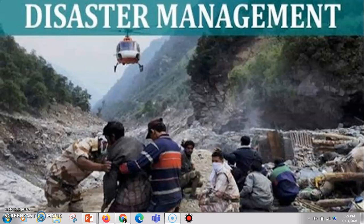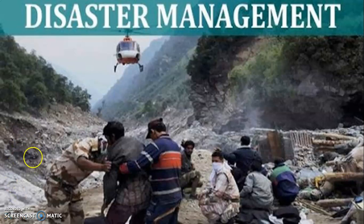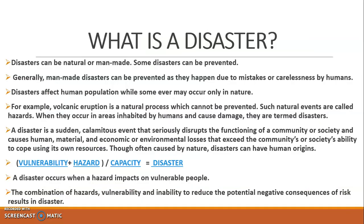Before understanding disaster management, we must know what is disaster and how it occurs. Basically, disaster can be natural or it can be manmade. There are various types of processes by which a disaster can happen. Some disasters can be prevented before they happen, or there can be less impact after their occurrence.